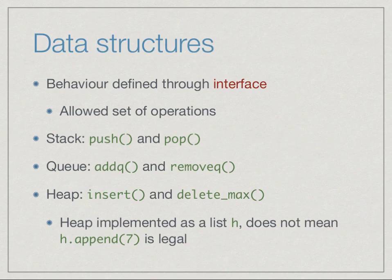Just because we implement a heap as a list, it does not mean that the functions defined for lists are legal for the heap. If we have a heap h implemented as a Python list, though the list will allow an append function, the append function on its own does not maintain the heap property. In general, the call h.append(7) would not be legal.